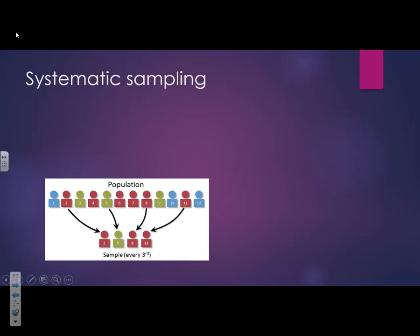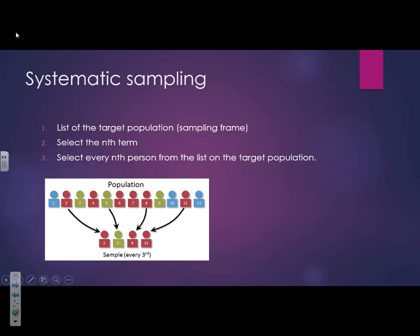Systematic sampling: you get a list of the target population — a sampling frame — and then select every nth term. The nth term just means any interval you pick, such as every 3rd, 15th, or 42nd person. For example, if it's every second number, you go 2, 4, 6, 8, and so on. The interval can be chosen using a random number generator.